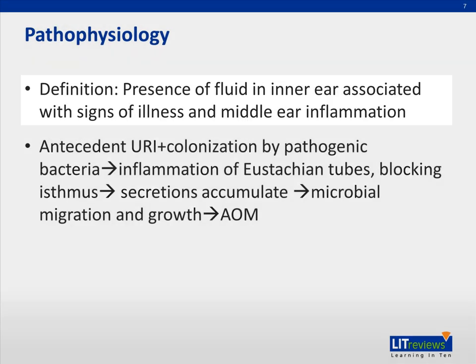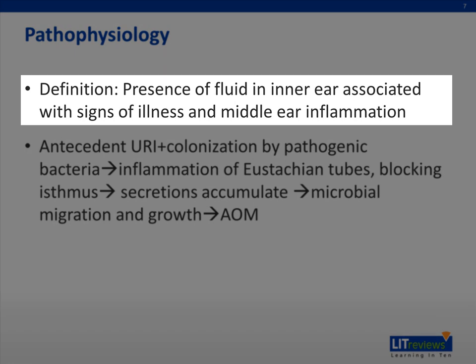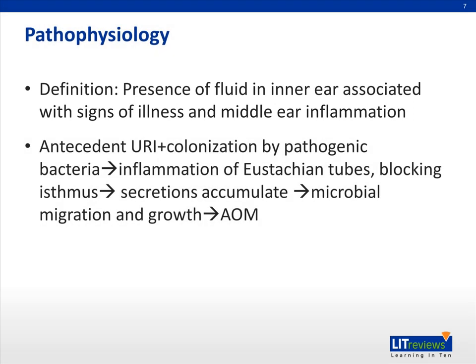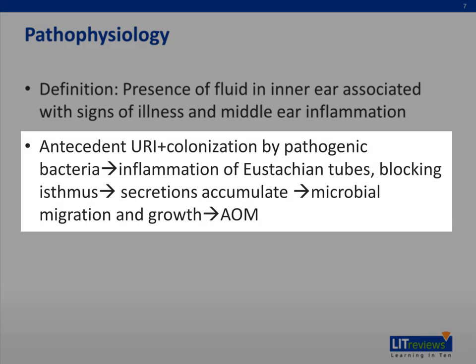Acute otitis media is defined by the presence of fluid in the inner ear with signs of middle ear inflammation, as well as signs of systemic illness. In a typical case of acute otitis media, a child colonized with pathogenic bacteria develops a URI, which leads to inflammation of the eustachian tubes obstructing the isthmus.